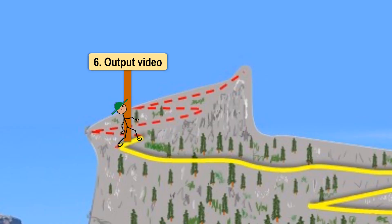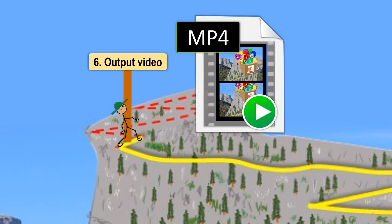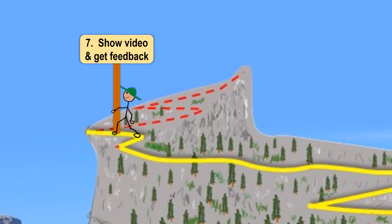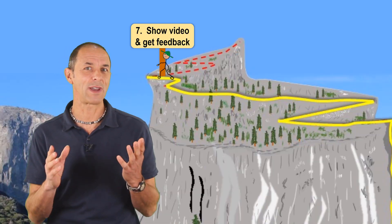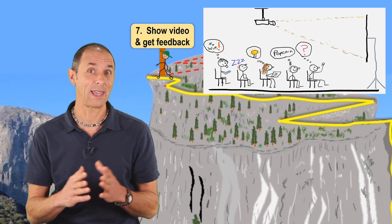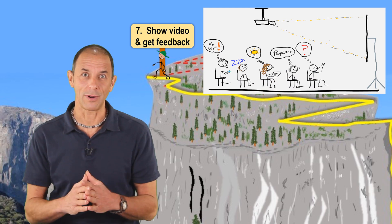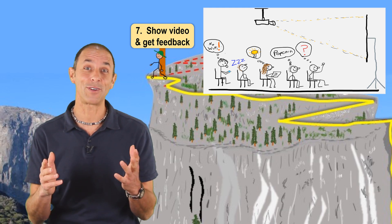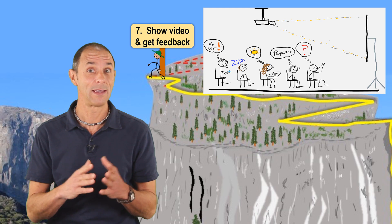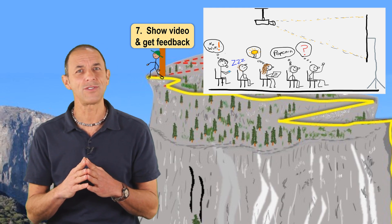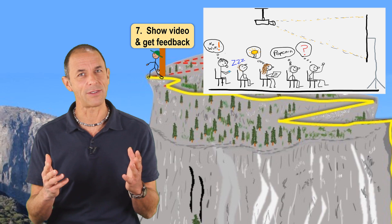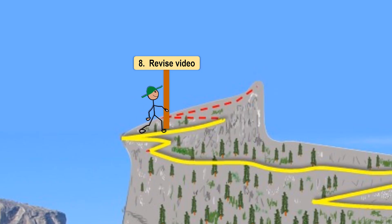Once I've added all the visuals and I'm happy with the flow of the video, I output it as an MP4 file and move on to step seven, where I show it to different people to get their feedback. I like to actually watch them watch the video and observe their reaction — are they paying attention, do they look bored, are they laughing when it makes sense? And after watching, do they ask questions that tell me they understood my message? Then I take that feedback and make corrections or modifications where they make sense.